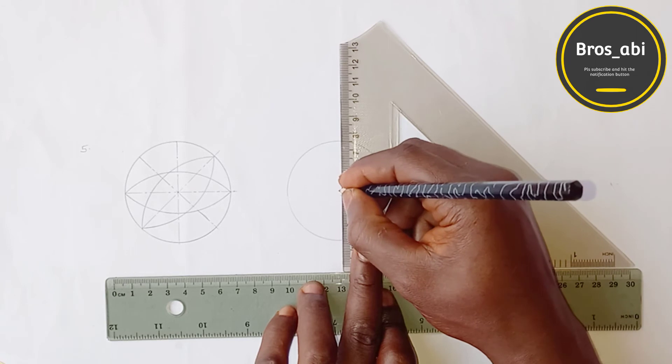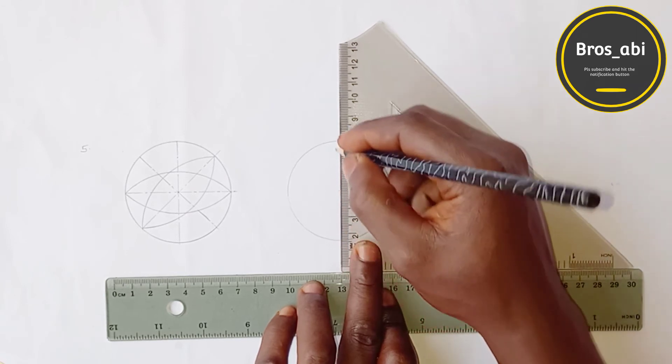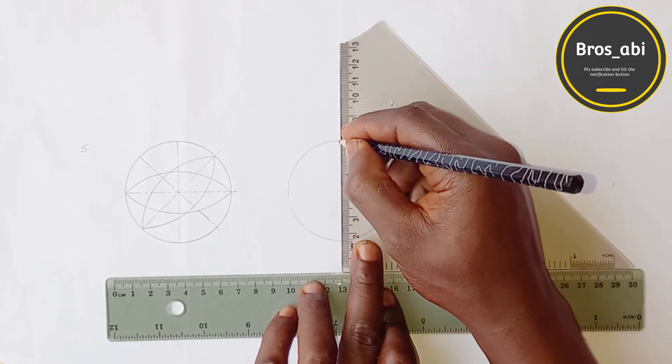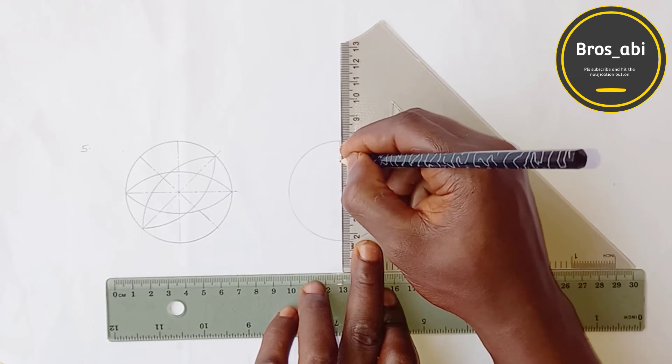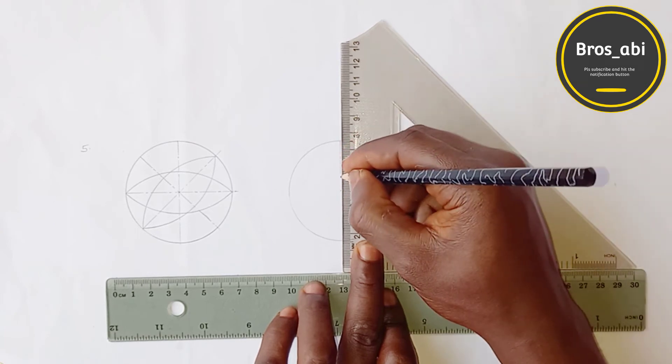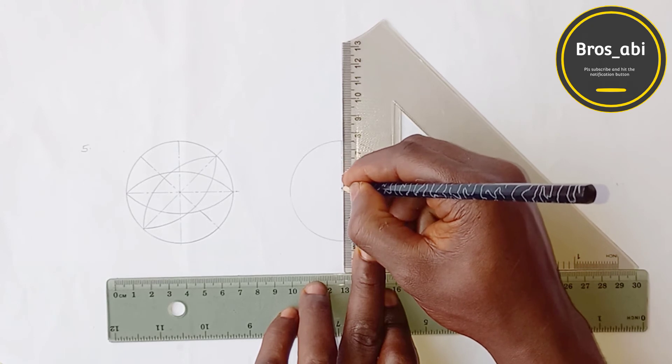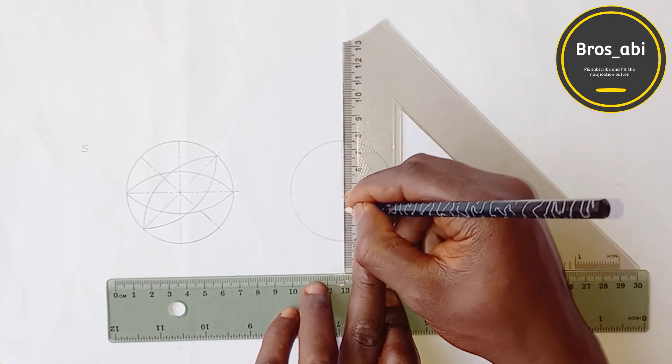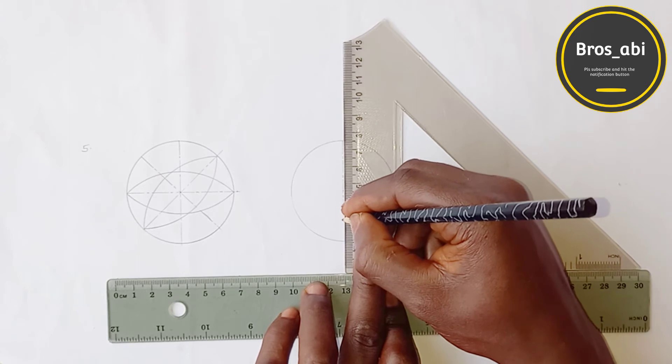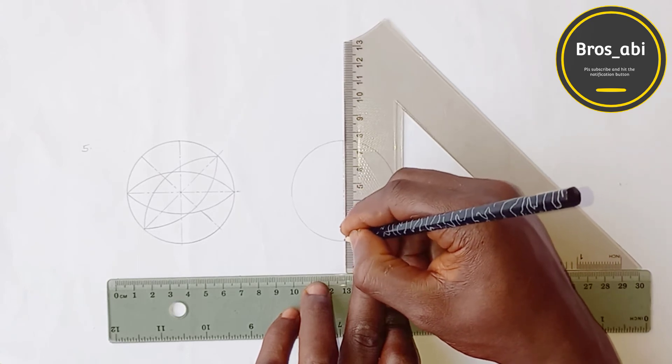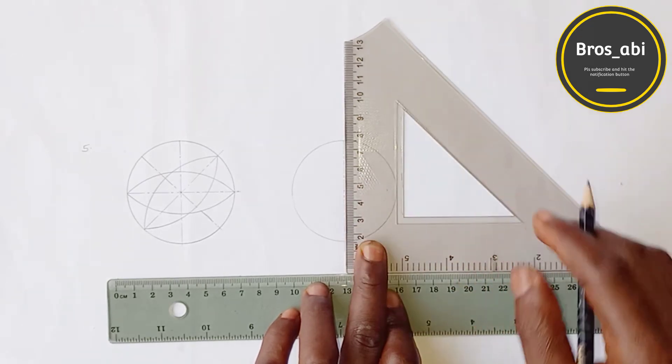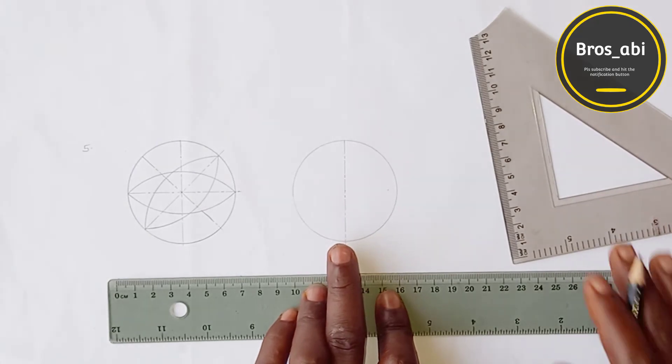This is my center. Then chain line. Long dash line then short dash line. All right. That is it.